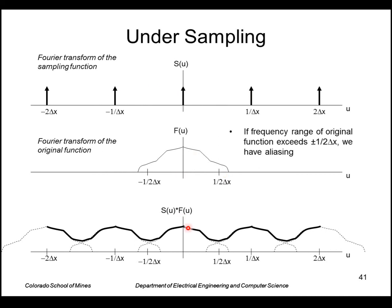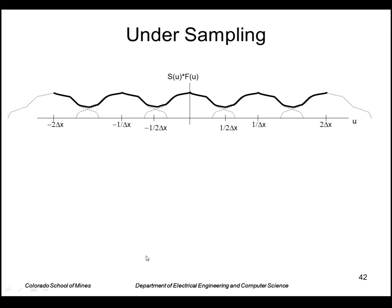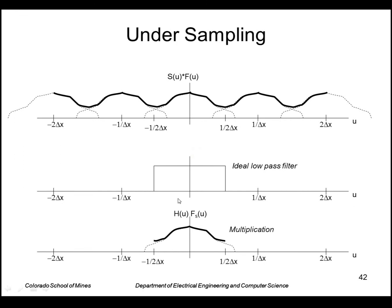effectively what we've done is generate a function with this transform. As you can see, we have a summation. Before we had these copies that were isolated, but now they're adding together at the points where they overlap. So that's a problem because when we go try to reconstruct it by multiplying by the ideal low-pass filter, we don't get back the original. We get back, in this area where they overlapped, we get back an additional portion that's not accurate.